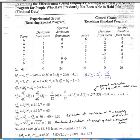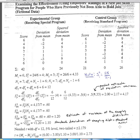The squared deviations and all variance estimates are in squared units, as is the variance of our sampling distribution. To get our estimate of the spread of the sampling distribution back into the original units, we move from variance to standard deviation by taking the square root of 1.2, which gives us 1.1. That is the standard deviation of the sampling distribution, better known as the standard error of the difference, or the standard error of the sampling distribution of the independent t-test.